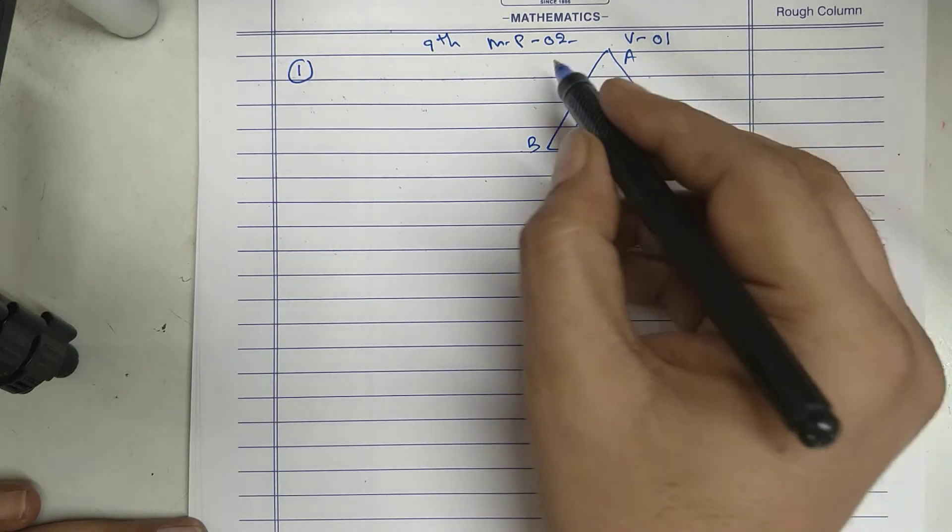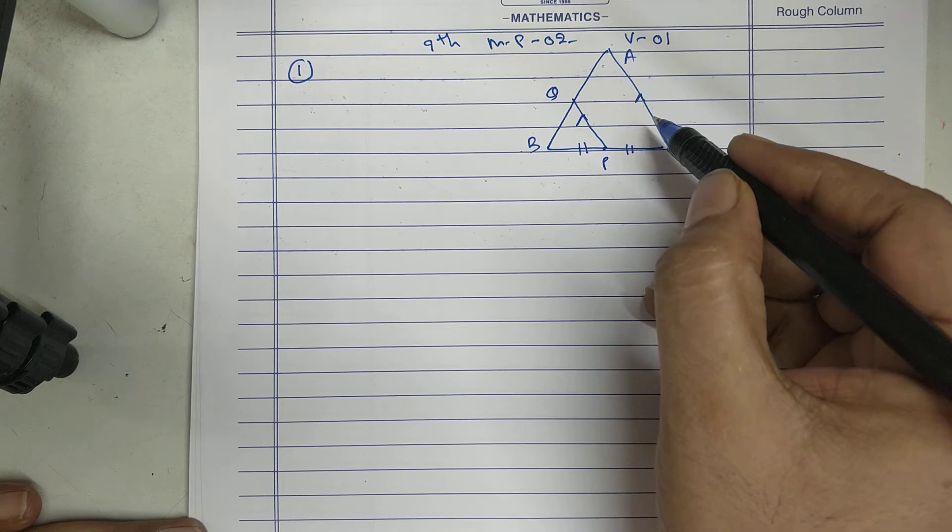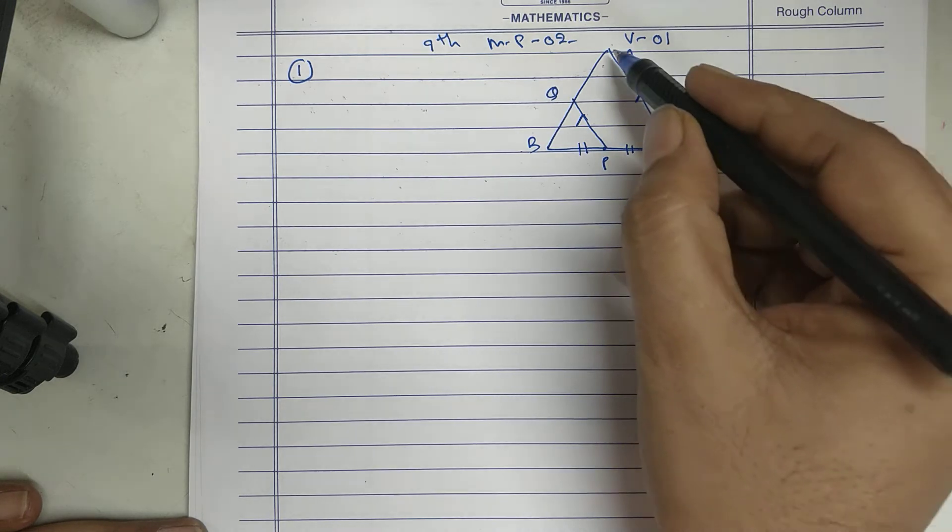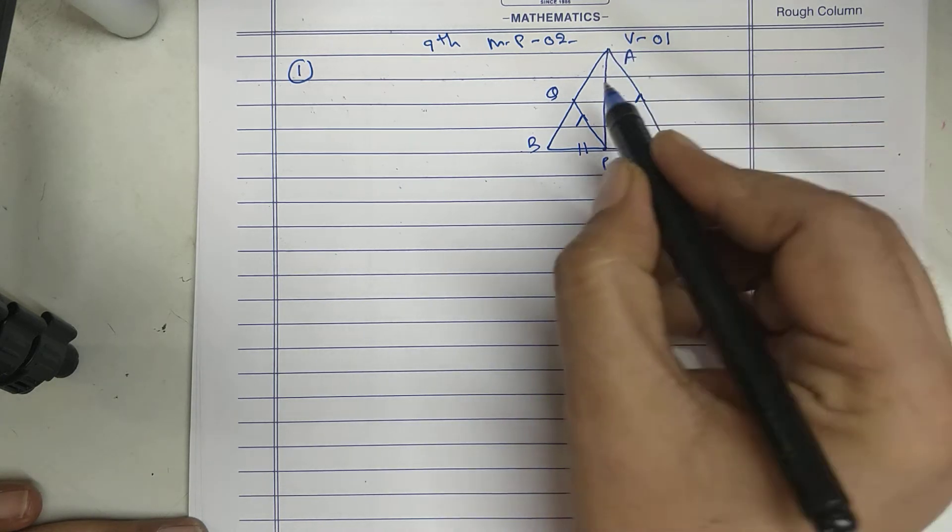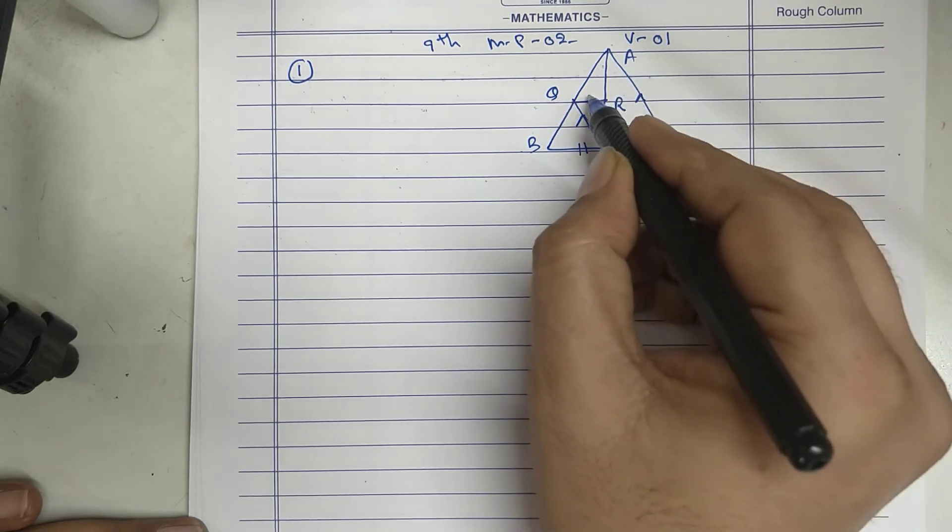Meet AB at Q, a line through Q parallel to BC, meet AP at R.